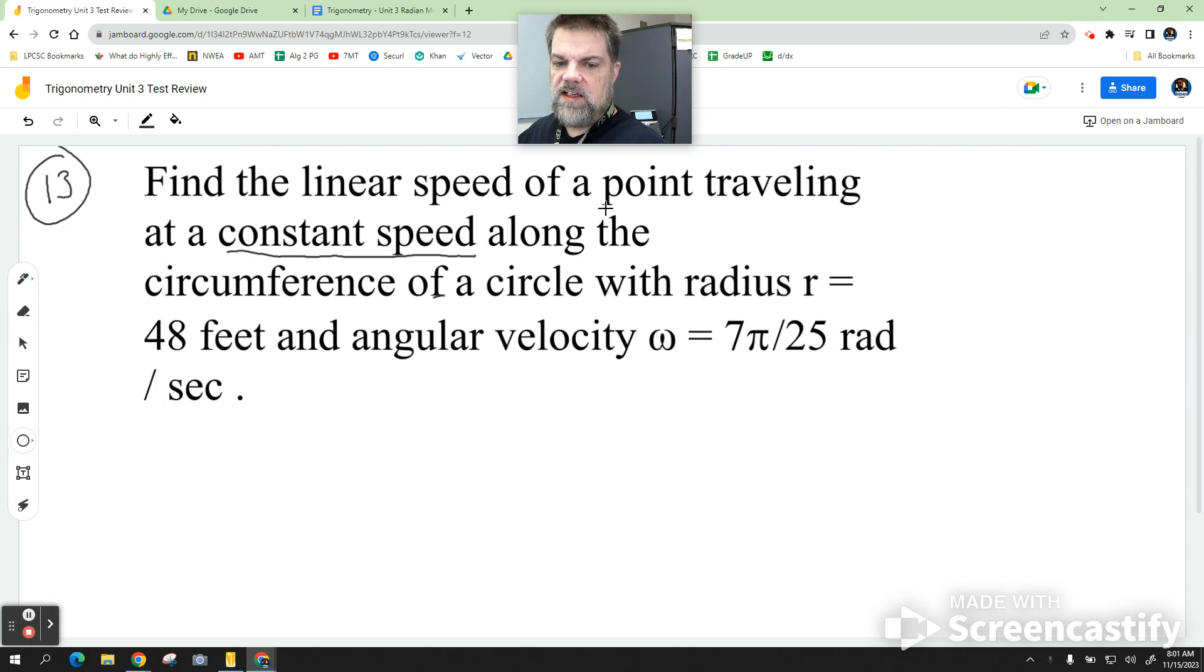So, immediately, I'm going to sketch my little image. So, this is a circle and it's a radius R equals 48 feet. And so, there's some little point. What they're saying is there's a point that is going, I don't know why they didn't say car or planet or moon or whatever, but they just set a point.